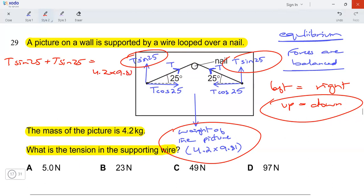Let's solve and we can get T. So 2 T sine 25 equals 4.2 multiplied by 9.81. Rearrange for T. Simply just solve mathematically. 4.2 multiplied by 9.81 divided by 2 multiplied by sine 25.